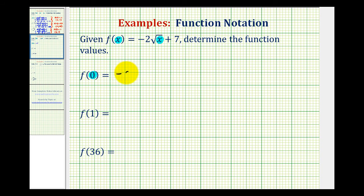So we'd have negative 2 times square root 0 plus 7. Well, the square root of 0 is 0, so we'd have negative 2 times 0 plus 7, which is equal to 7.